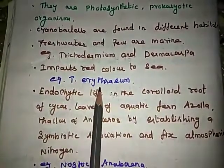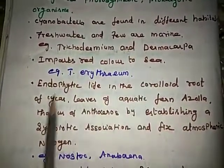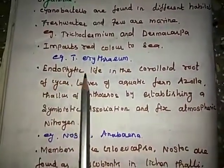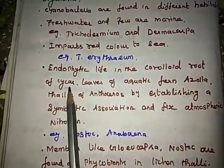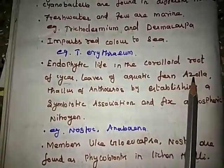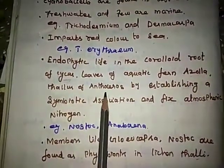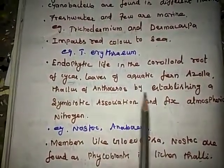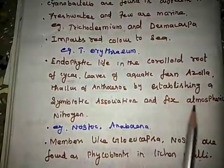Trichodesmium erythraeum imparts a red color to the sea. Nostoc and Anabaena lead an endophytic life in the coralloid roots of Cycas, a gymnosperm plant, and in the leaves of the aquatic fern Azolla, which is very useful in rice fields. Also found in the thallus of Anthoceros, a bryophyte.